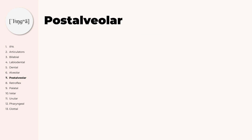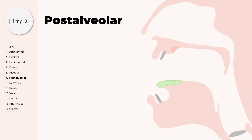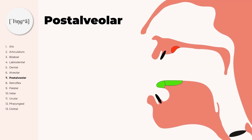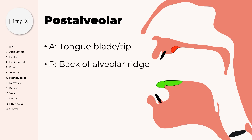Post-alveolar consonants are similarly to the alveolar consonants produced with the tongue blade and tip being active, but the passive part is now the back of the alveolar ridge. So it's still the part behind the upper teeth but further back in the mouth. Examples for post-alveolar consonants are SH and ZH.